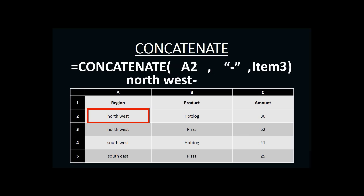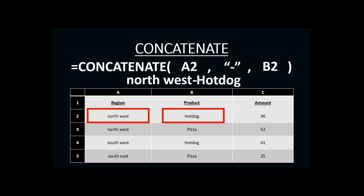Our third and last piece of information is the product name in column B — specifically the word 'hot dog' in B2. So B2 is our third item in the concatenate function. With that in place, our concatenate function produces 'northwest-hot dog,' which is exactly what our manager was hoping to get.